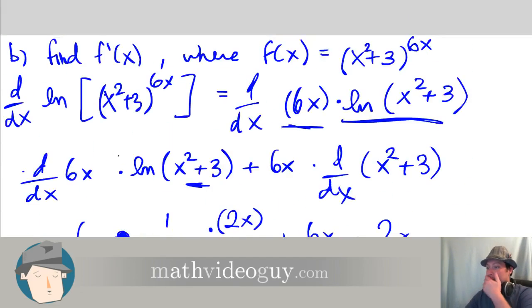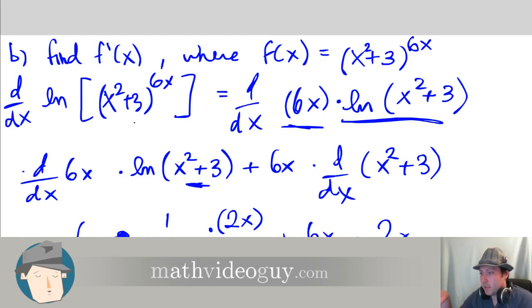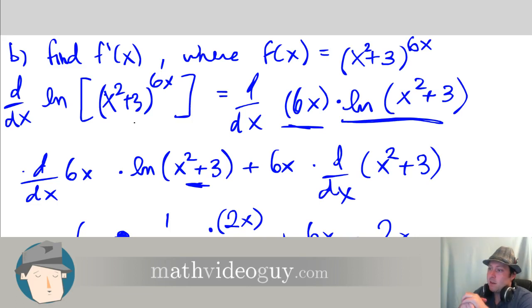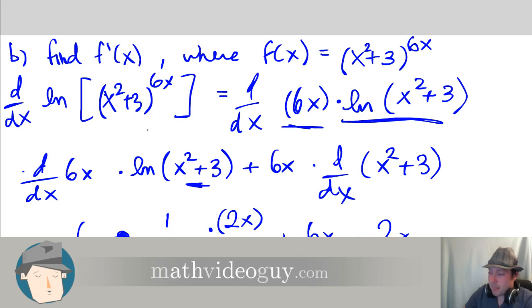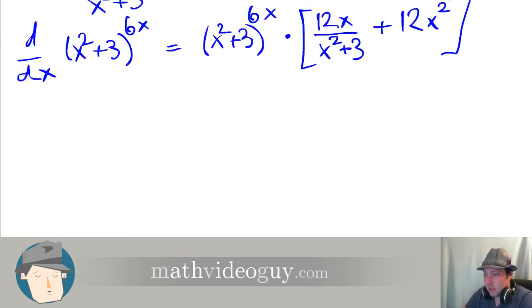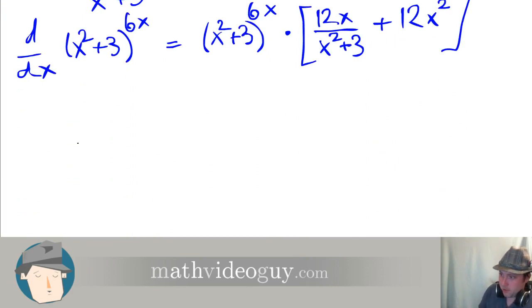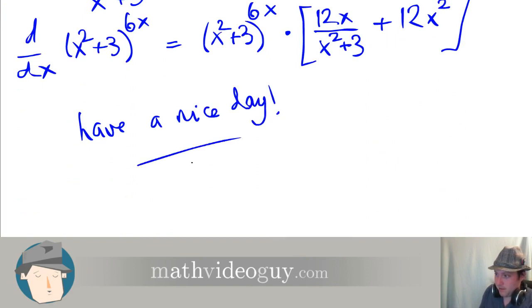So as you can see, the whole idea here is just that you're going to make use of the fact that logarithms make exponents come down. If you can't do a derivative because the exponent is messing things up, you can take the logarithm, make your life easy, and then multiply by f of x at the end. That will pretty much conclude this — have a nice day. Goodbye.